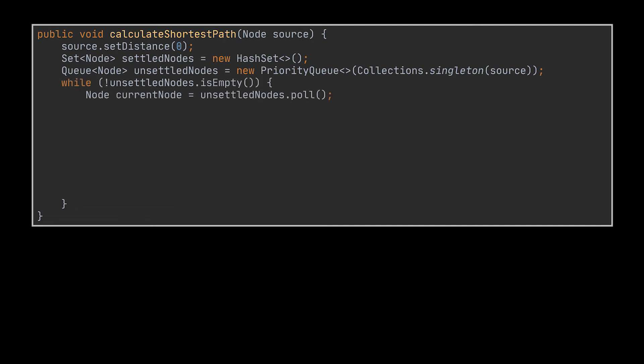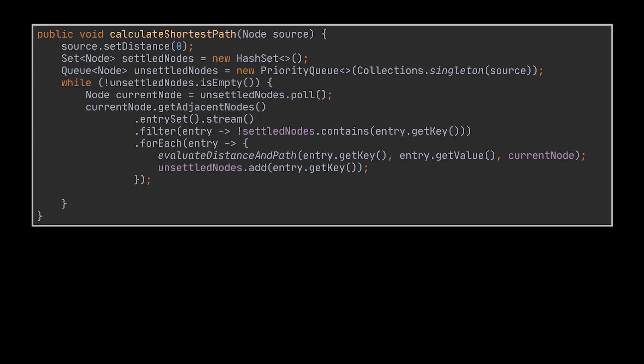While this queue is not empty, what we are going to do is poll the node with the minimum distance from it and then we are going to loop over its adjacent nodes. More precisely, for each adjacent node that isn't settled, meaning we still don't have a decisive minimum distance for it, we are going to update that node's distance and shortest path via the evaluateDistanceAndPath method which we will be implementing in a sec, and then we will insert this node in the queue of unsettled nodes. After we loop over all of the nodes' adjacent nodes we polled, we add the node, the one we are currently working with, to the set of settled nodes.